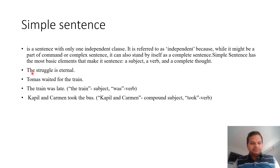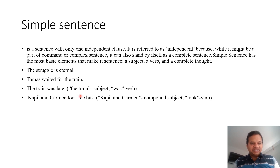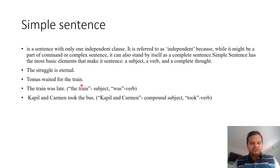For example: 'The struggle is eternal' — it is itself complete. 'Thomas waited for the train.' 'The train was late' — here 'the train' is the subject and 'was' is the verb. 'Kapil and Kamen took the bus' — here Kapil and Kamen are the compound subject and 'took' is the verb, telling his actions.